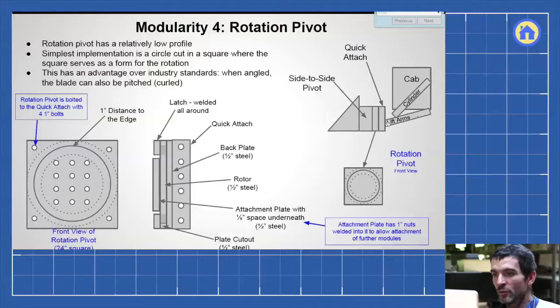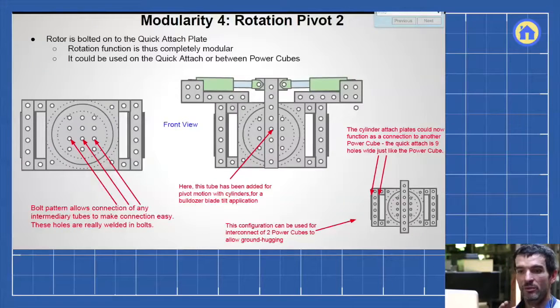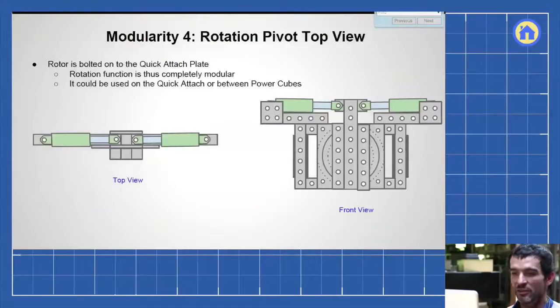If you talk about a 6-way rotating blade, we can first attach a rotating pivot on the front of the quick attach plate, so we can get angling of the blade. Or you can use that to connect between two cabs to get a ground hug pivot, there's various things.